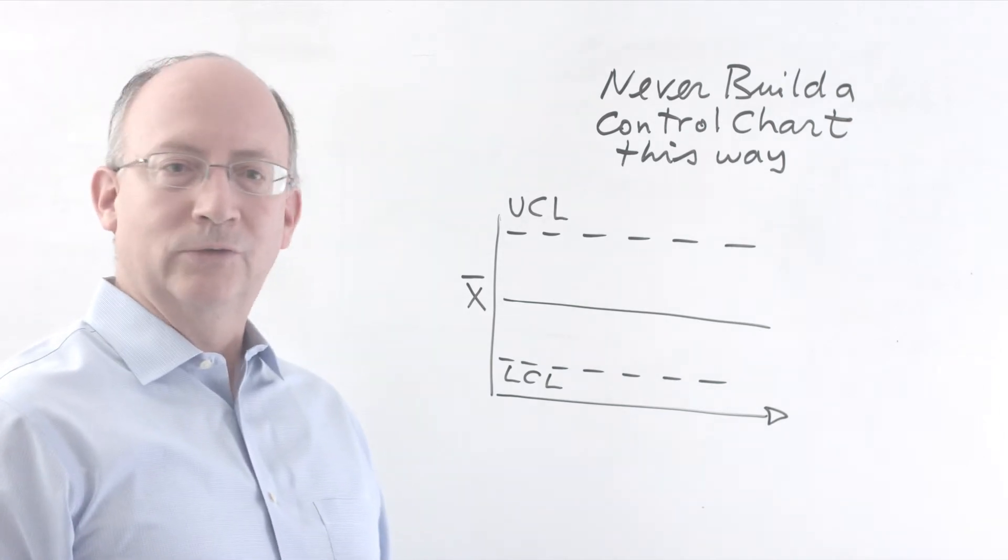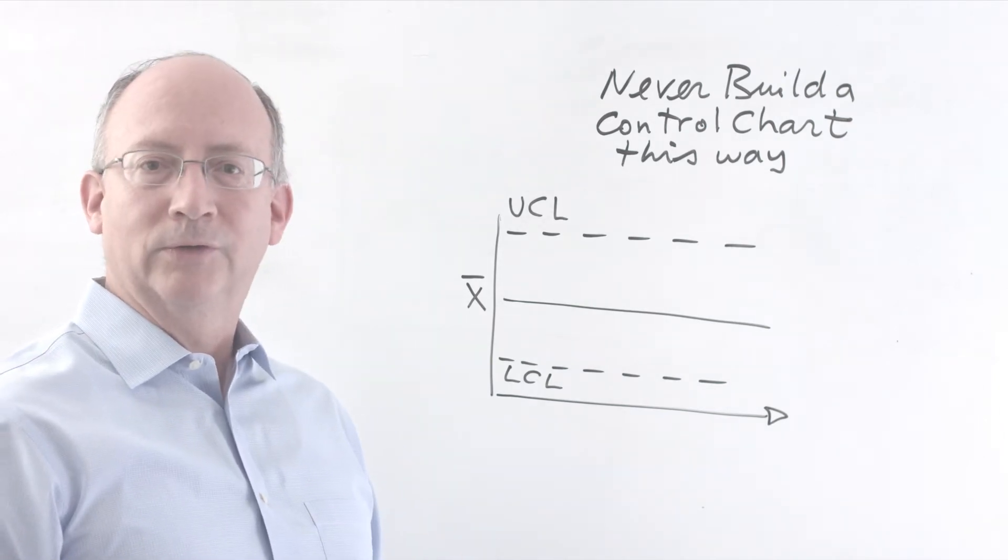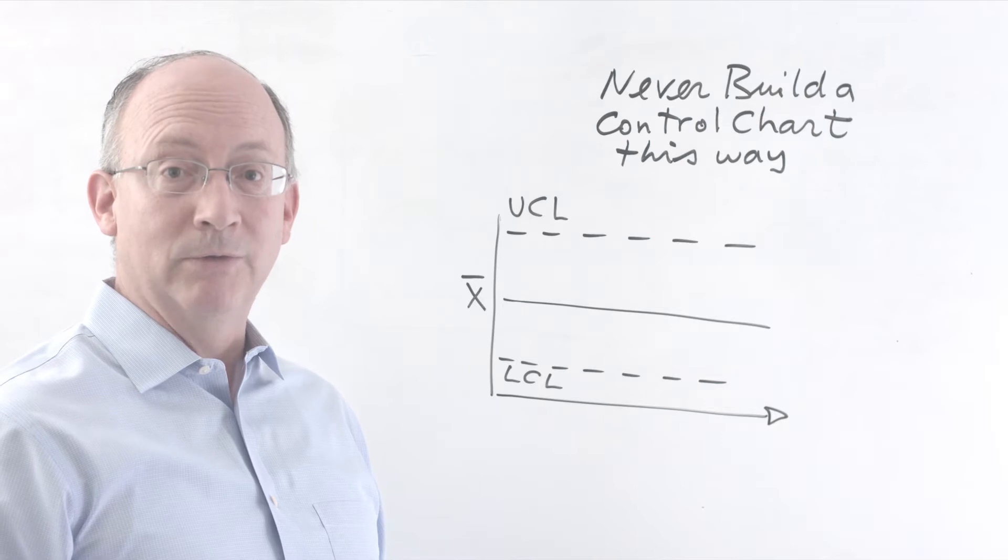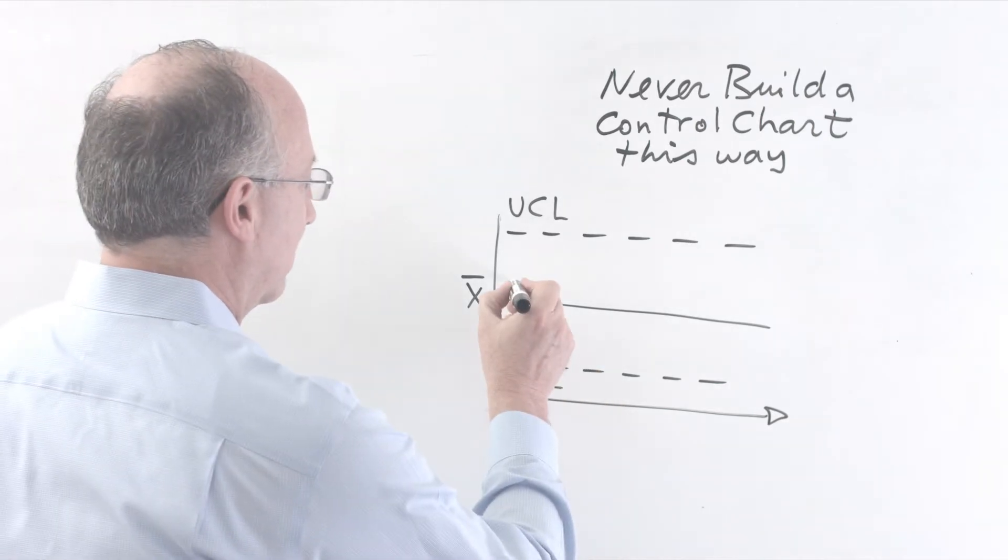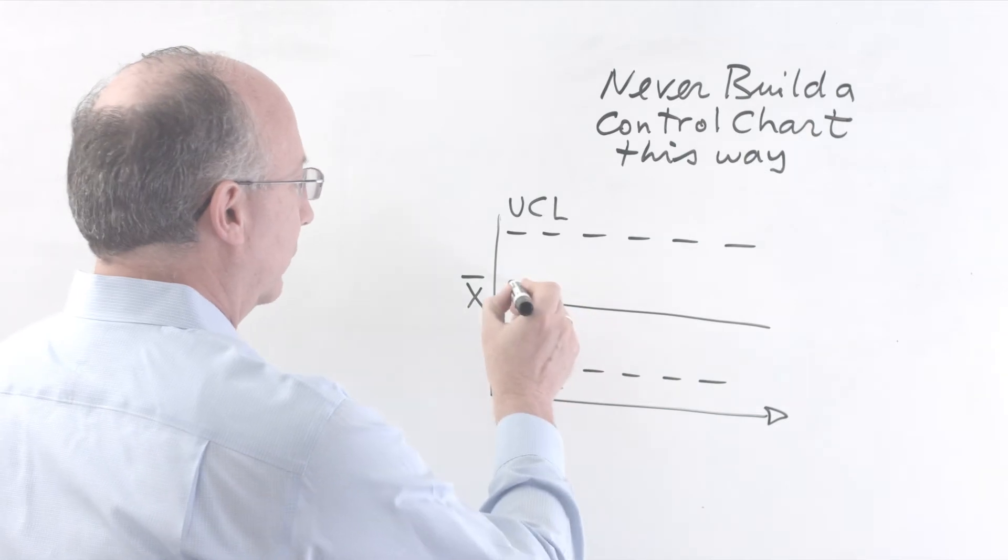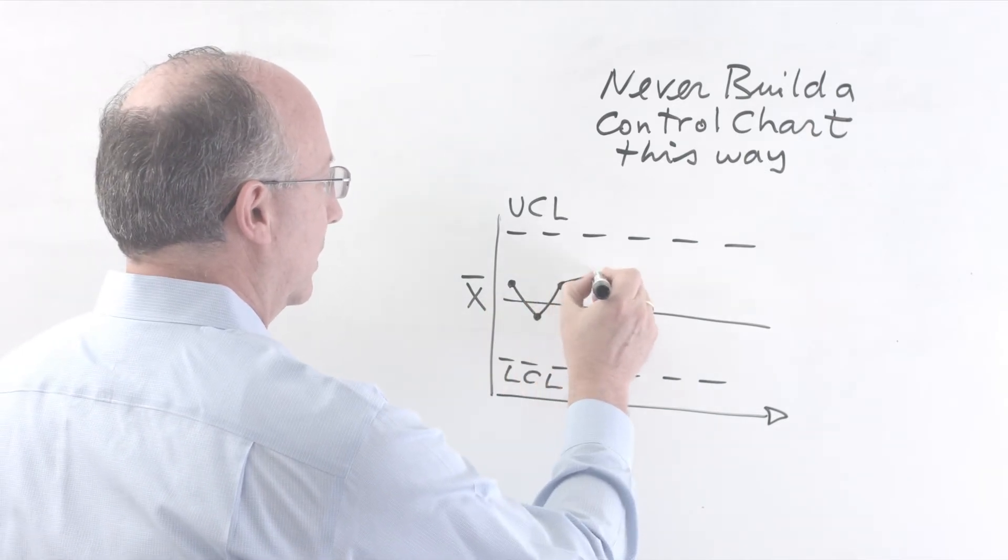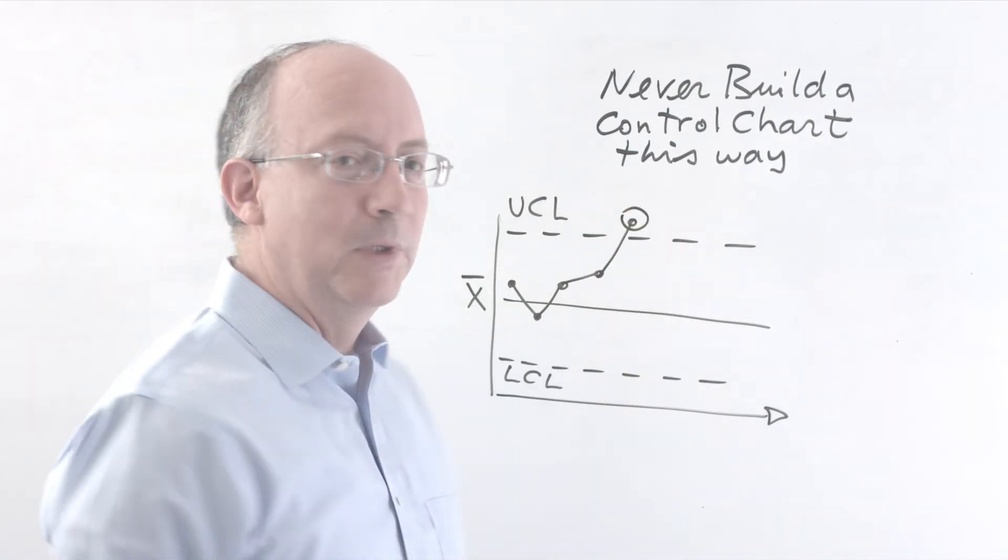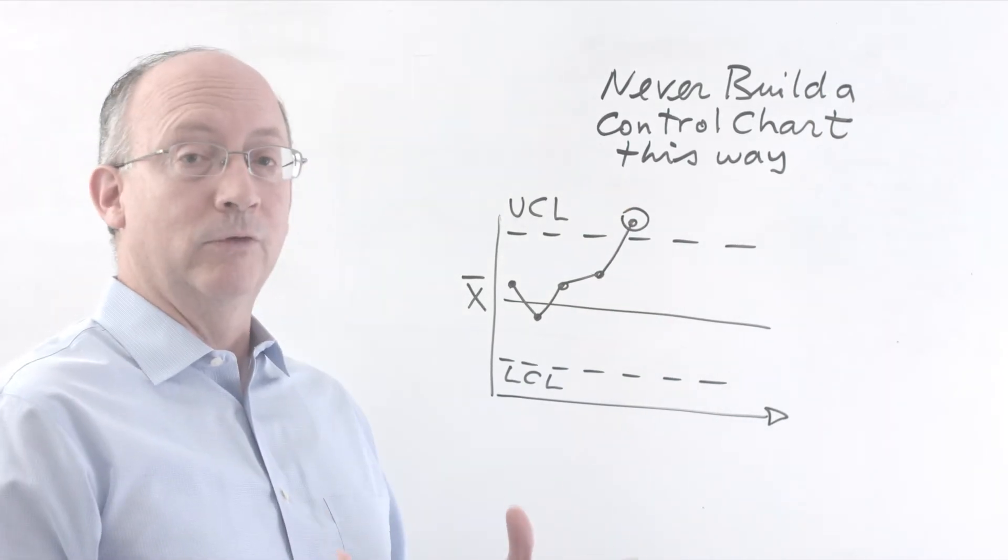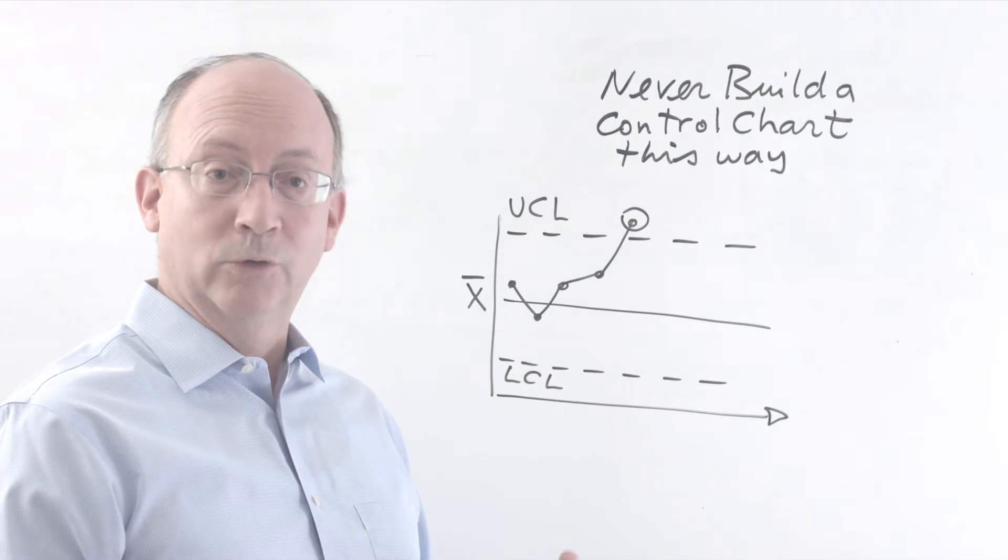Now we use control charts to tell whether or not a process is displaying abnormal behavior. Abnormal behavior would be something like this: you have a certain variable that takes these values and then one over here, maybe another here, another here, and then there's one over here. That will be abnormal behavior because it's just too far from the average and it's actually outside of the control limits.